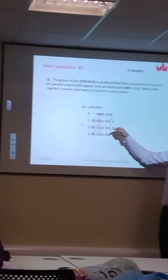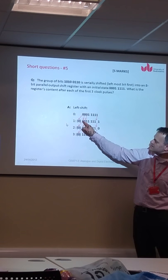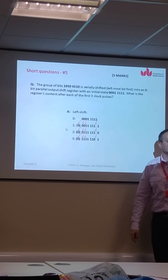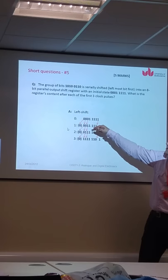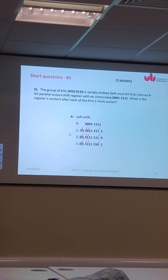The second time, I'm shifting again. So this one is coming here, this one is coming here, etc. This zero is getting lost. The next bit that's coming here is the next bit from the serial input. And the third clock pulse, I'm again shifting everything to the left direction. This zero is lost. And what's coming here is the third one.